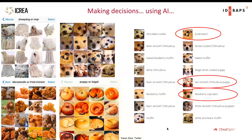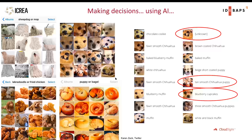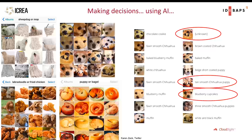Deep learning is extremely powerful for recognizing patterns, especially images. Examples from Google or Facebook show that you provide an image and the computer tells you what is in it. Even difficult cases like distinguishing chihuahuas from muffins — the computer is mostly able to discriminate these perfectly, although sometimes it makes mistakes.